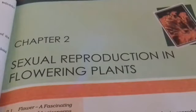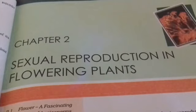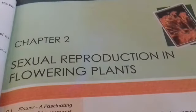Good morning children. Today we start the second chapter: Sexual Reproduction in Flowering Plants. In angiosperms, the flower is the reproductive structure. We will first study the pre-fertilization structures and events — that is, before fertilization — focusing on the male and female reproductive parts. You know the structure of a flower: sepal, petal, stamen, pistil, etc.